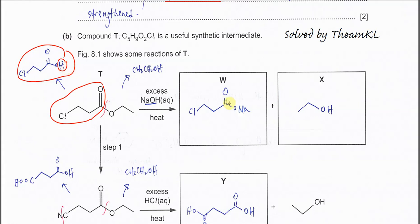Therefore, you must give the carboxylate salt as your answer — don't give COOH, you must give the carboxylic salt. So this product is W, and X is just the ethanol.